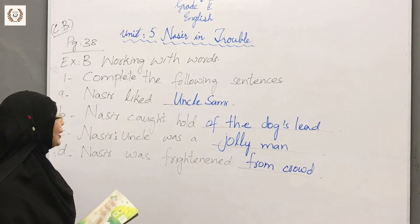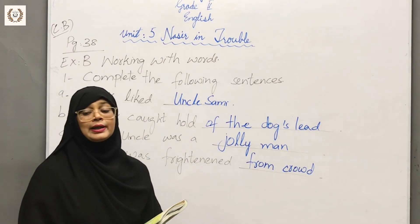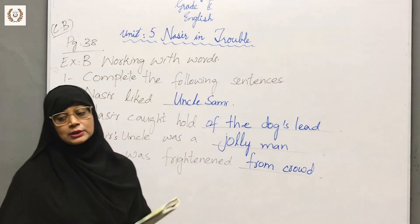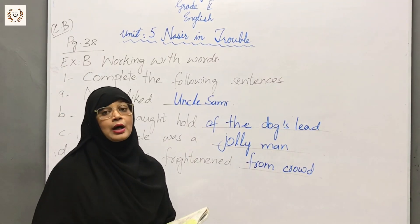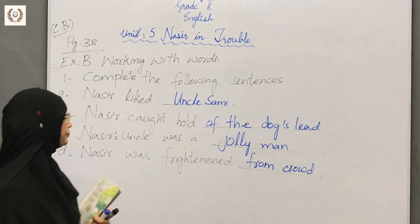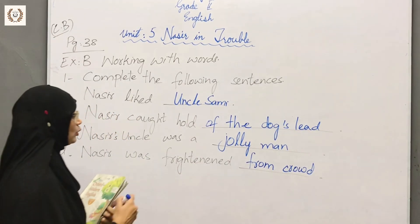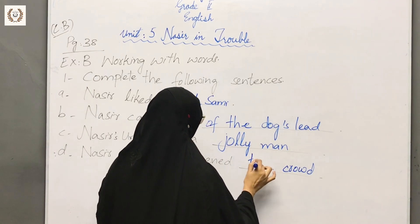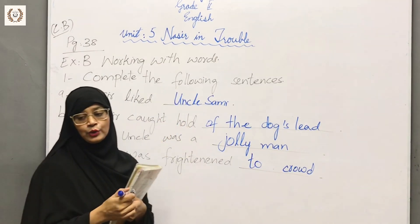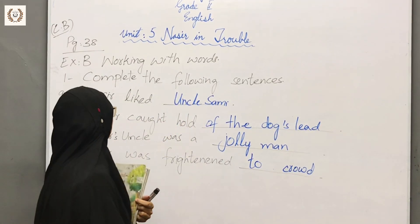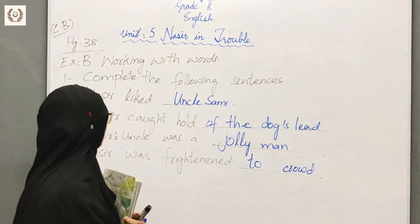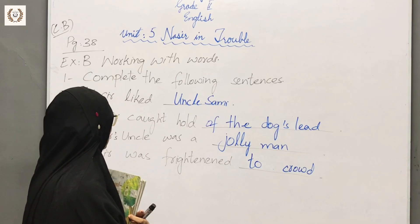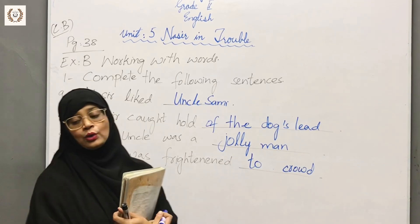Okay, see. Sentence C: Nasil's uncle was a jolly man. Sentence D: Nasil was frightened — Nasil kis jis se khauf zeta ho gya ta — from the crowd. Nasil was frightened of the crowd. One more time: Nasil liked Uncle Sami. Nasil caught hold of the dog's lead. Nasil's uncle was a jolly man. Nasil was frightened of the crowd.